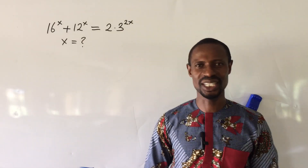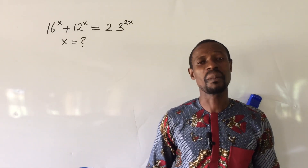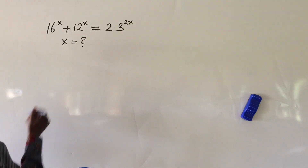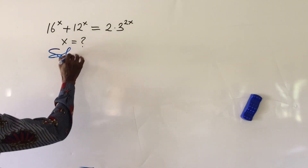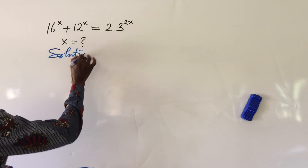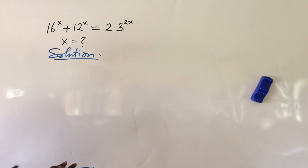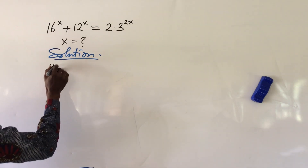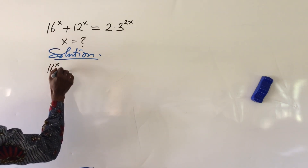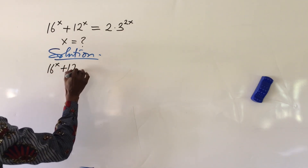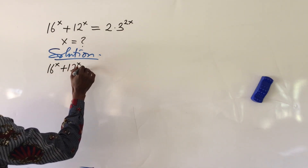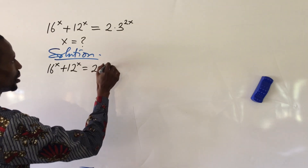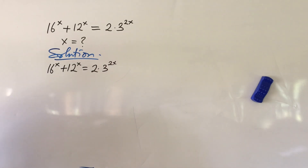So let's go into today's challenge without much waste of time. We pull down our question here: 16 to the power of x plus 12 to the power of x equal to 2 times 3 to the power of 2x.